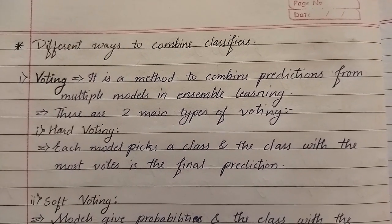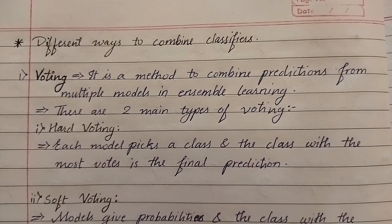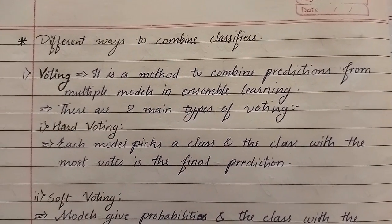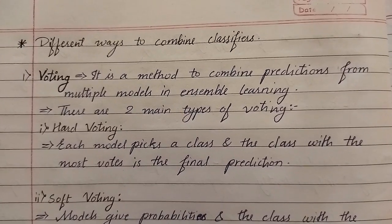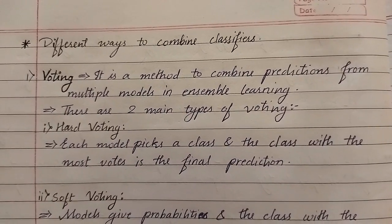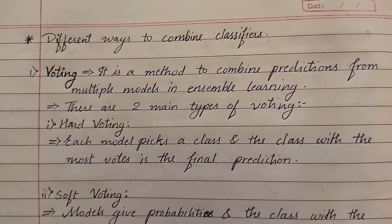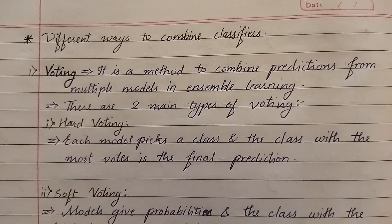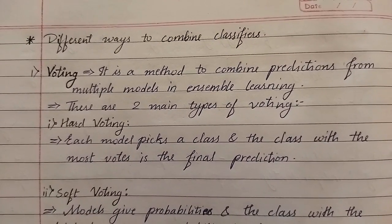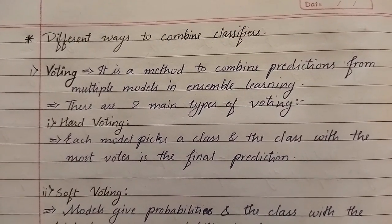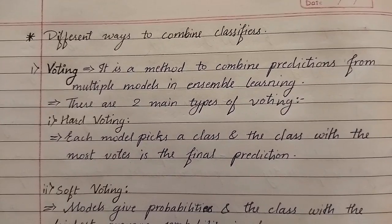Hello guys, welcome back to the channel. Today we are going to see different ways to combine classifiers. The first one is voting — it is a method to combine predictions from multiple models in ensemble learning.